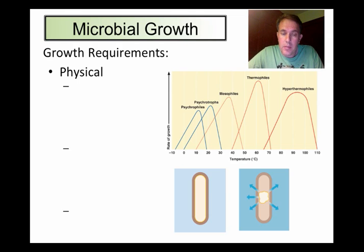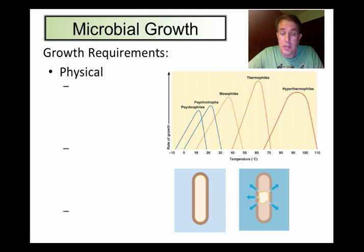An actively growing microbial culture will become an increasingly large population within a very short period of time if the growth conditions are right. By understanding the conditions necessary for microbial growth, we can determine how to control the growth of microorganisms that cause disease or food spoilage, for example. We can also learn how to encourage the growth of useful microbes in those we wish to study in the lab.